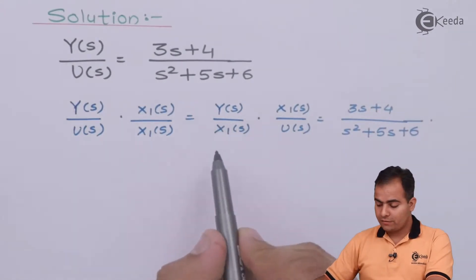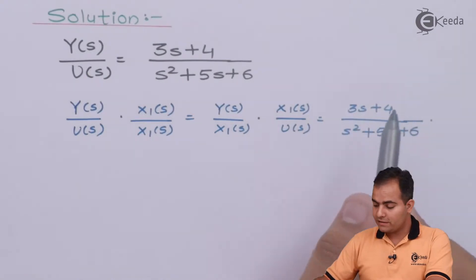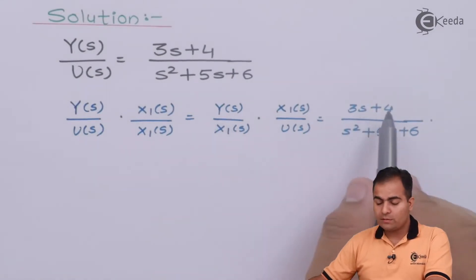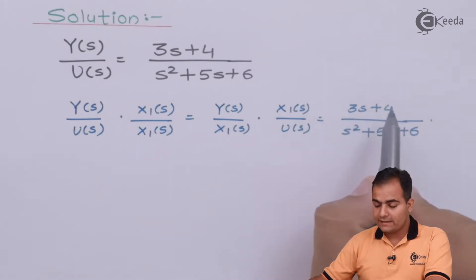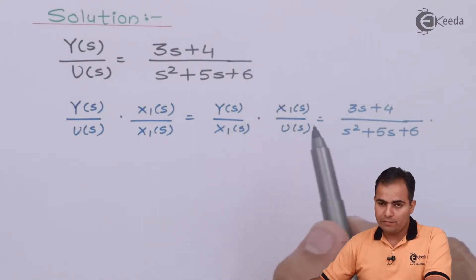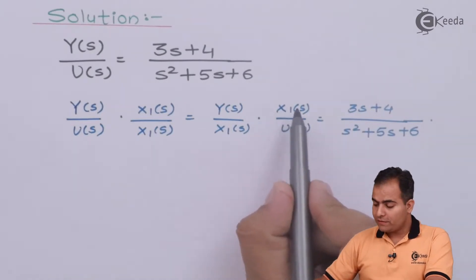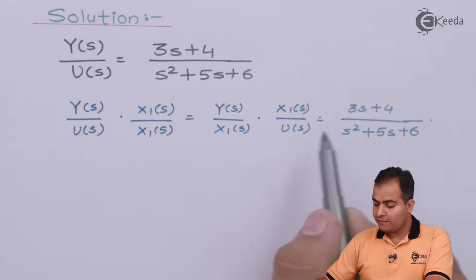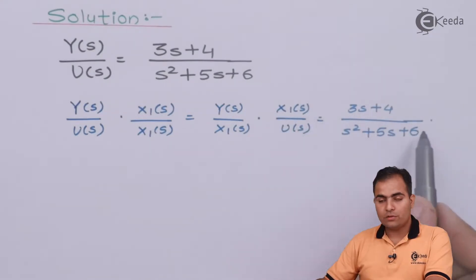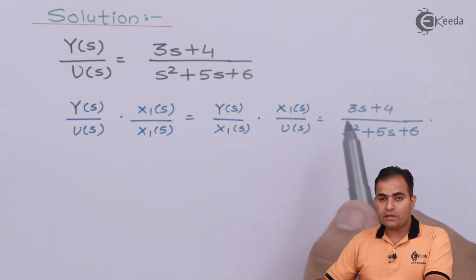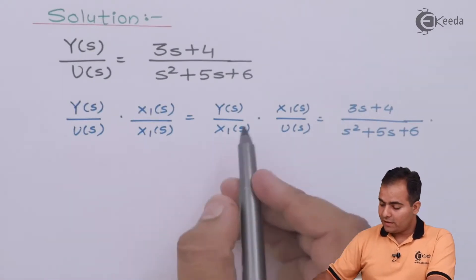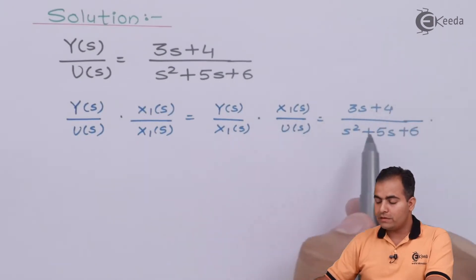Now we compare: Y(s)/x1(s) is set equal to the numerator (3s + 4), and x1(s)/U(s) is set equal to 1/(s² + 5s + 6). If we multiply x1(s) on the right hand side, we get the output equation Y(s). And by cross-multiplying x1(s)/U(s), we get the input equation where x1(s) is multiplied by the whole denominator.